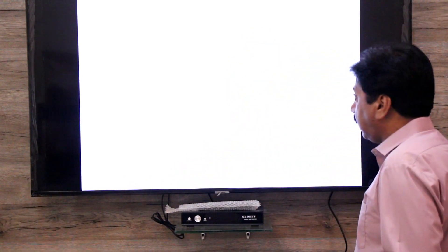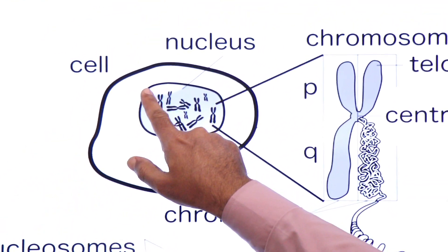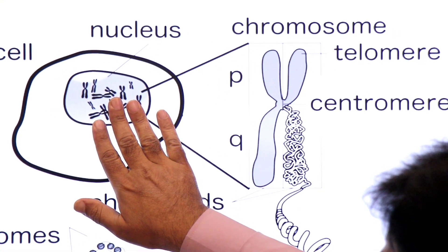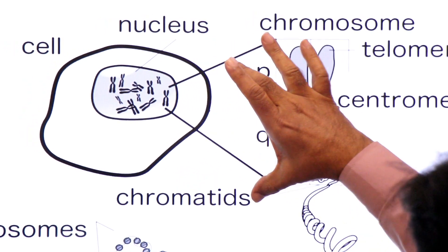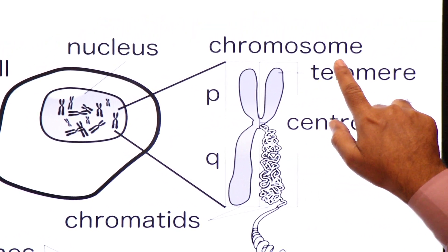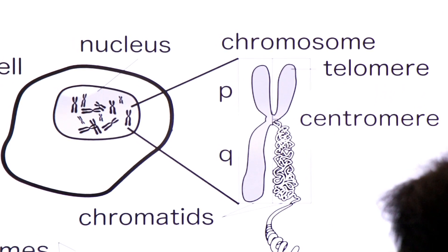Eukaryotic chromosome is a highly organized structure present within the nucleus. In the nucleus there are thick thread-like structures, and these thick thread-like structures are known as chromosomes.